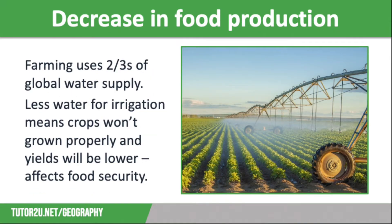Water insecurity also has an impact on food production. Farming across the world uses more than two-thirds of global water supply, so in areas prone to unreliable rainfall and drought events, farmers will struggle to make a living or provide enough food for their families, as a lack of water for irrigation means crops won't grow properly and yields will be lower. It also has an impact on the quality of meat produced if livestock doesn't have enough water to drink.